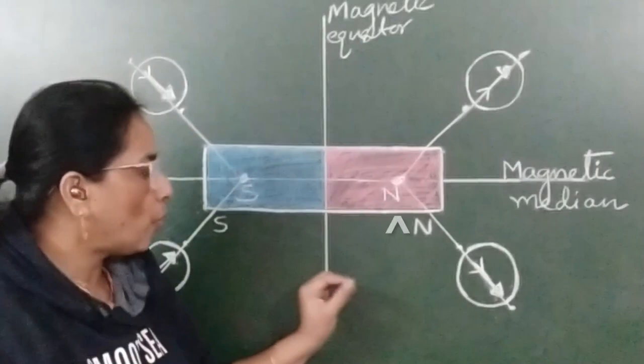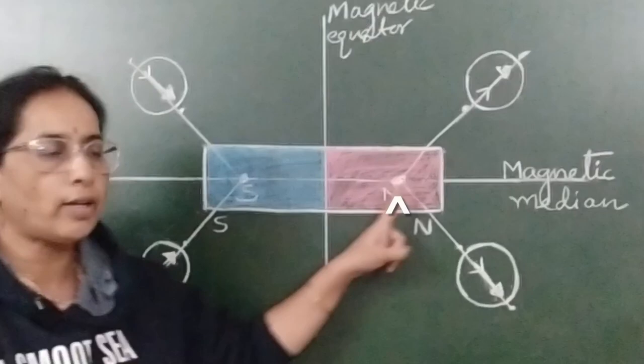So, if the compass needle was pointing outward, then that particular pole is north and if the compass needle was pointing inward, that particular pole is south pole.